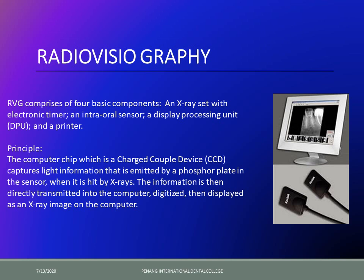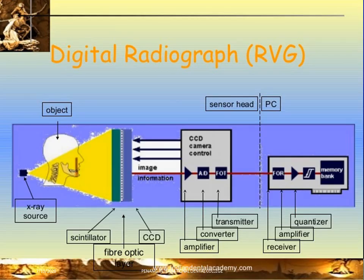The intraoral sensor is composed of a charged coupled device which captures light emitted from a phosphor plate placed just behind the sensor when hit by x-rays. As soon as x-rays hit the phosphor plate it emits light, which is captured by the charged coupled device, then transmitted to the computer, digitized, and displayed as an image on the computer screen. This is how the radiovisiograph works.